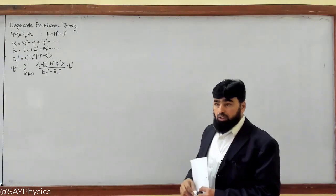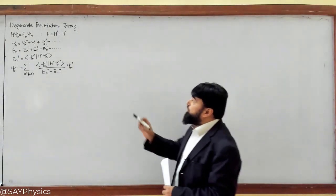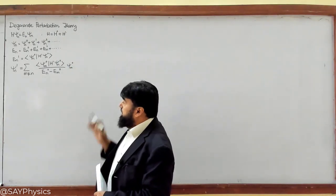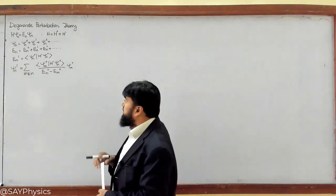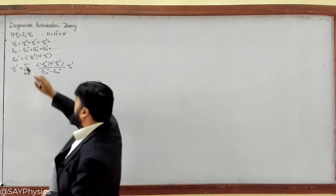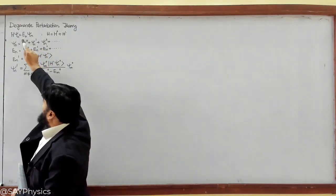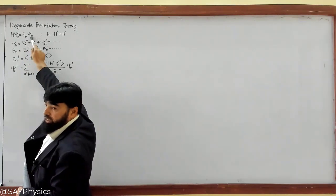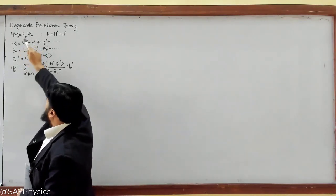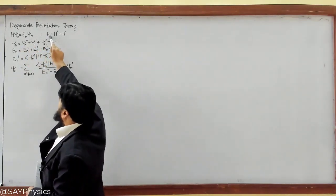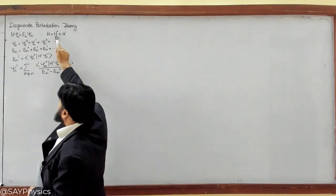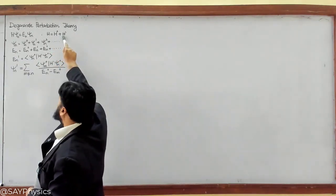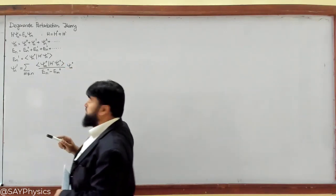We will start this lecture with Degenerate Perturbation Theory. In the Non-Degenerate Perturbation Theory, we have already covered these things, like we will have to find H psi_n equal to E_n psi_n, where the Hamiltonian is the addition of the unperturbed and the perturbed Hamiltonian — like the perturbation involved in this one.